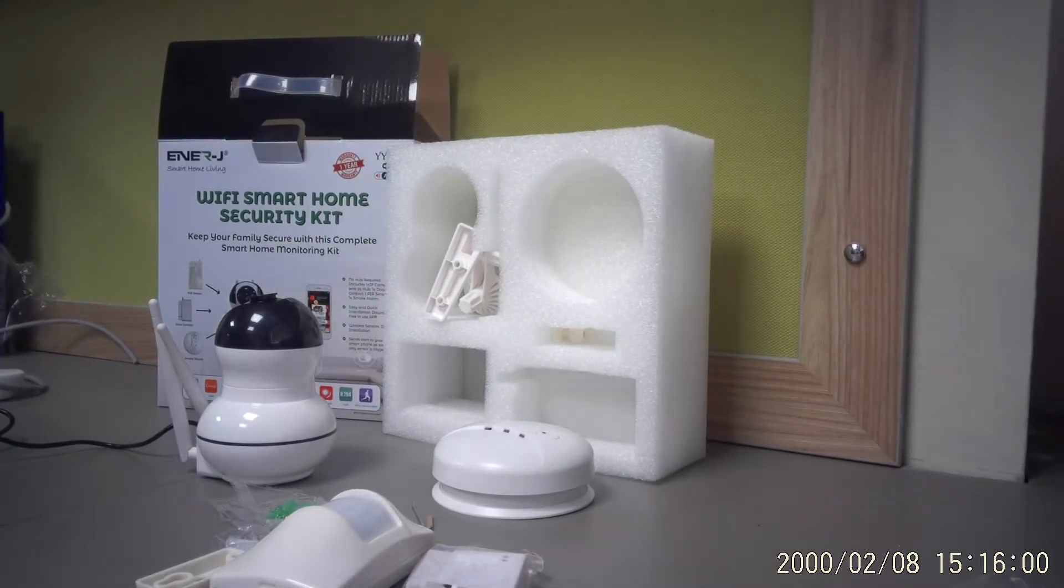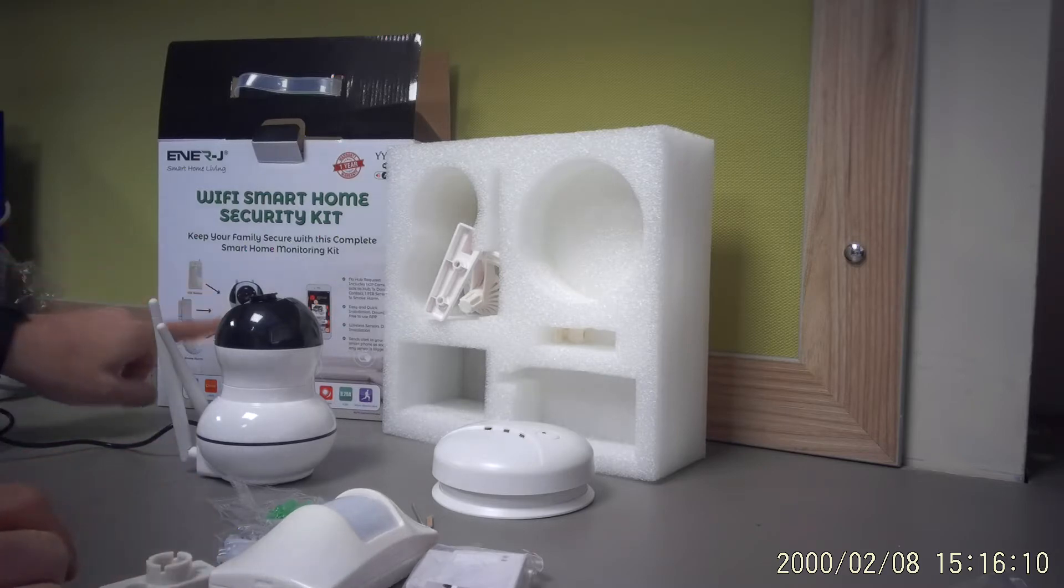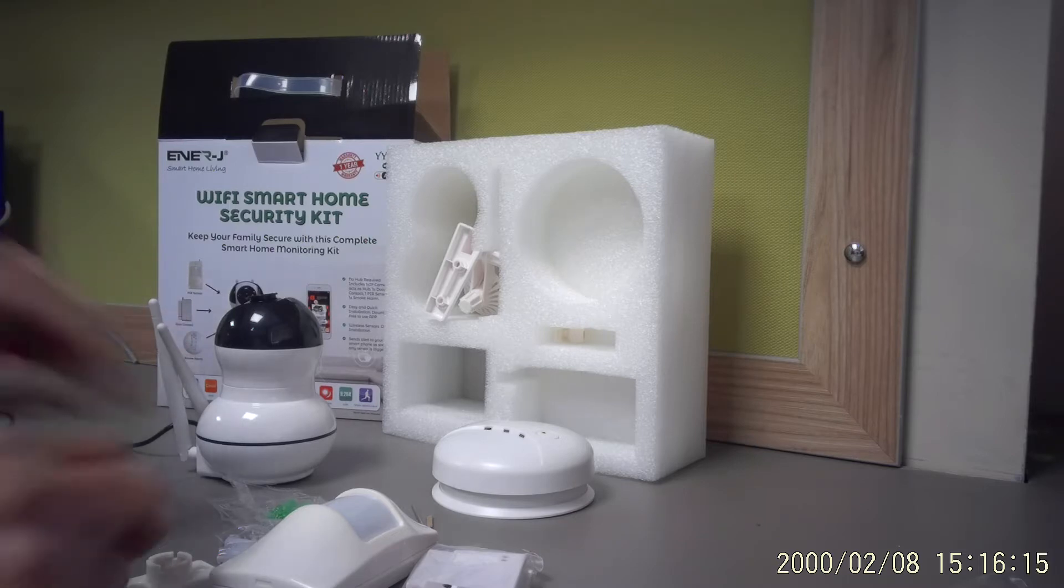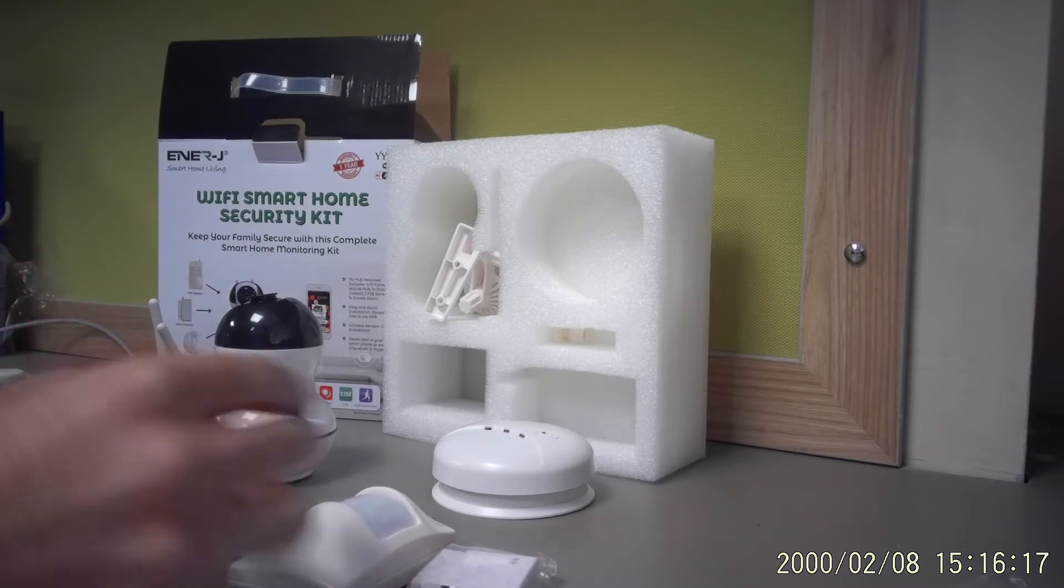Hi guys, today I'm going to show you how to pair your Energy smart security kit on your app and how to start using it. As you can see, this device comes with a camera, one PIR sensor wireless, one door contact, and one smoke alarm. You also get a lot of accessories if you want to mount it anywhere.